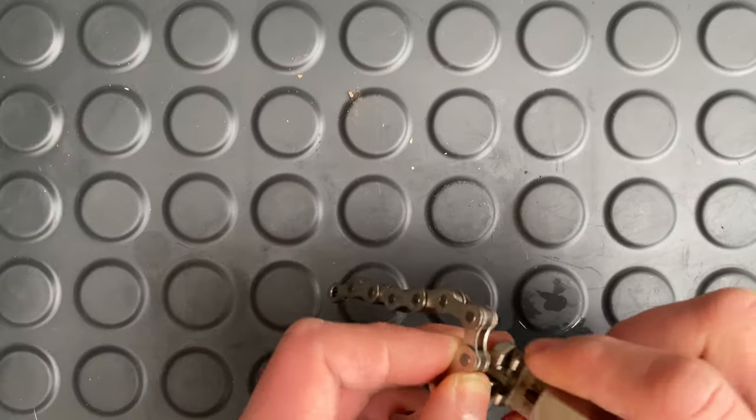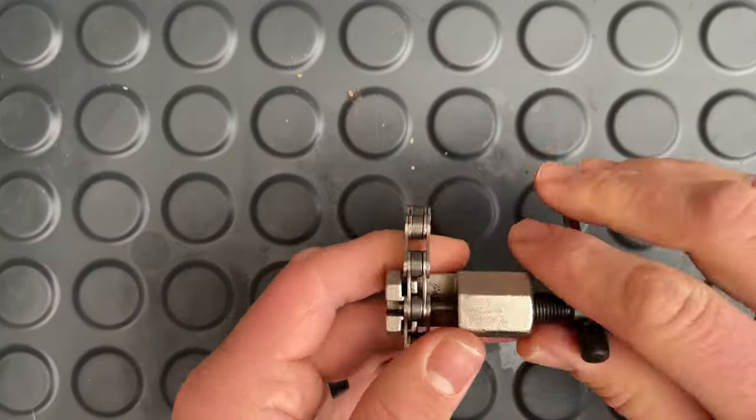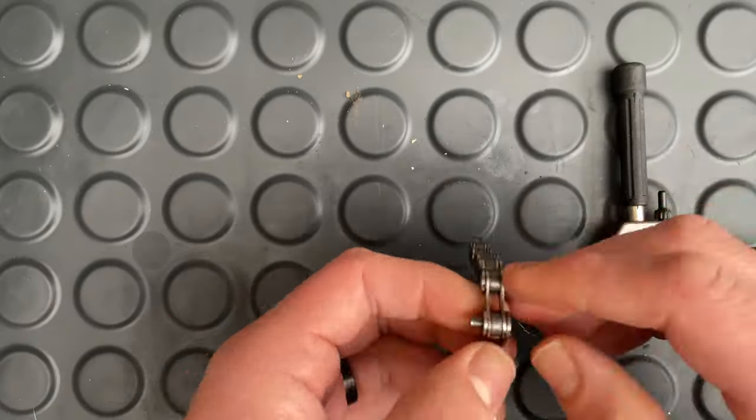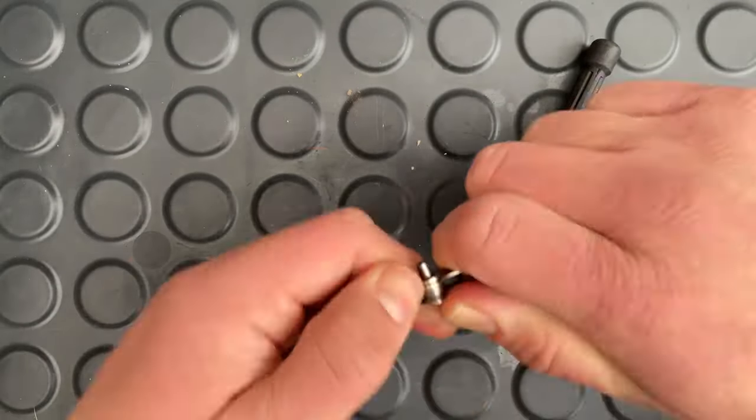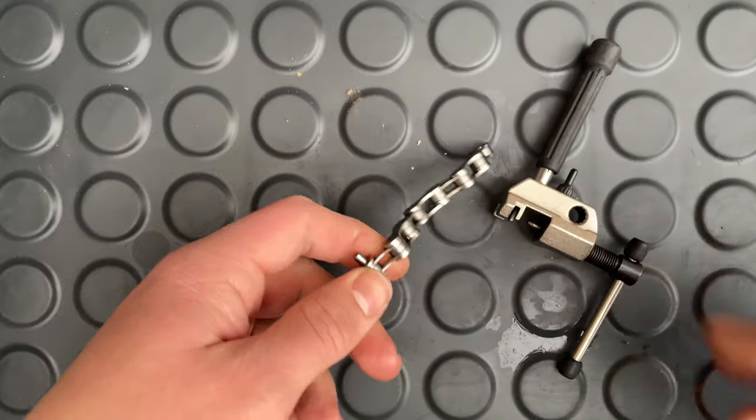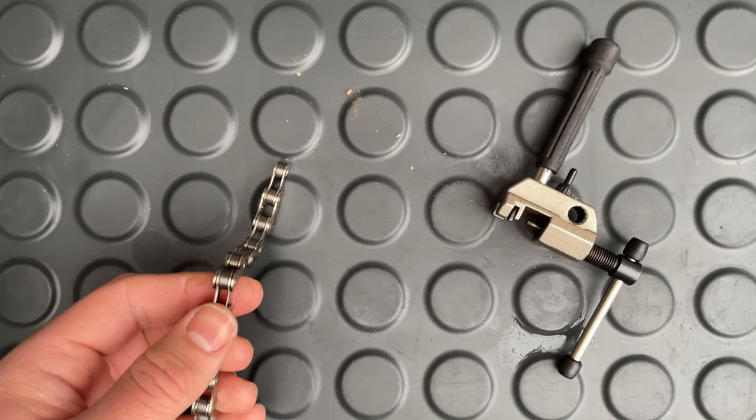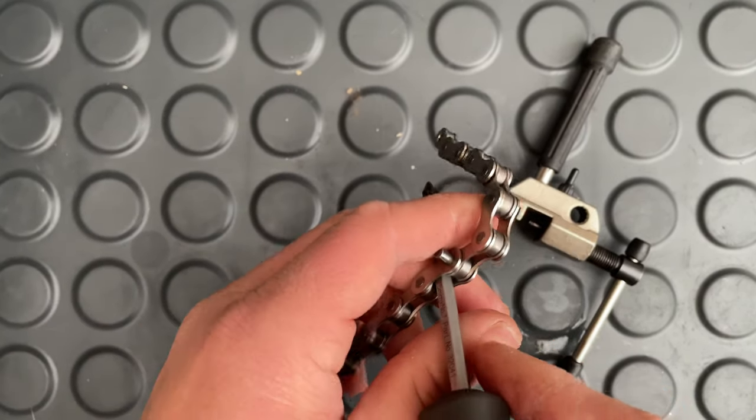And then with your favorite chain tool start removing the link. It's important not to remove it completely, make sure you just leave it on the edge. I didn't quite put it through just enough so I had to use a screwdriver to jimmy it all the way off like this.